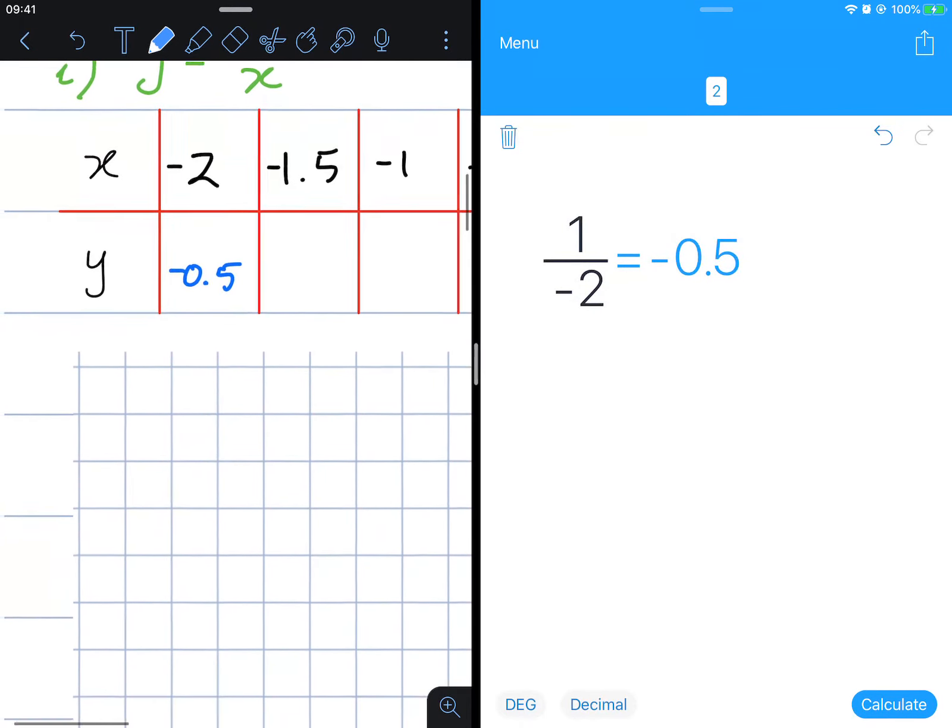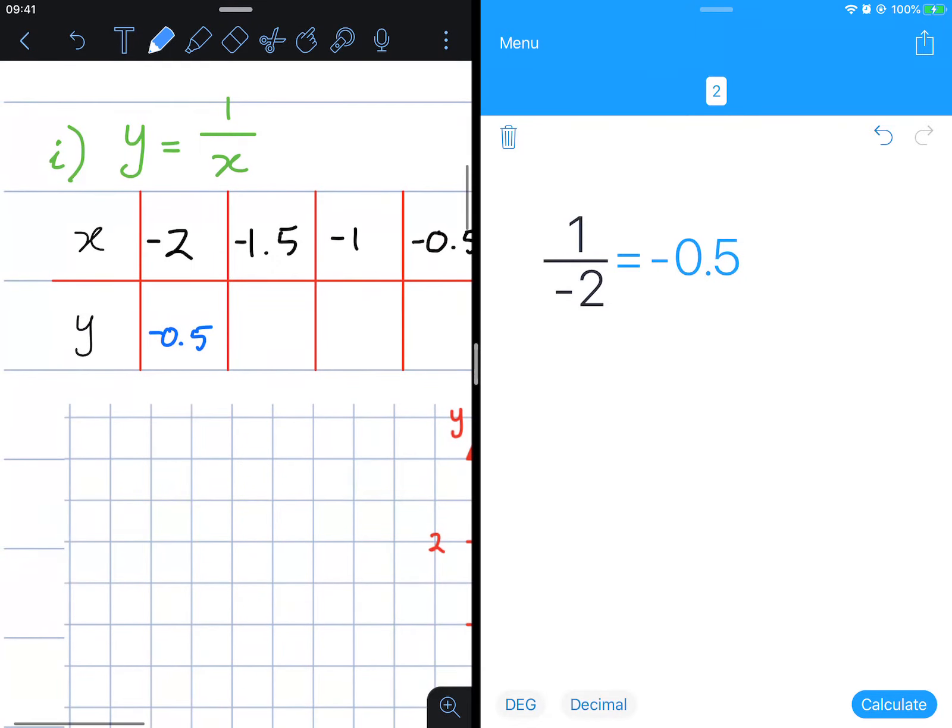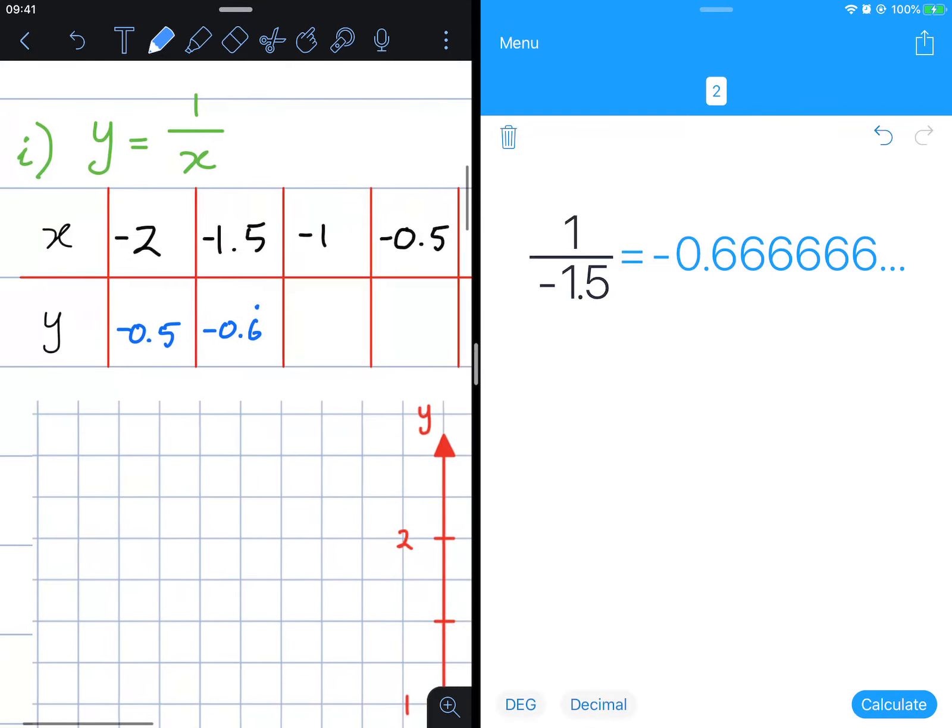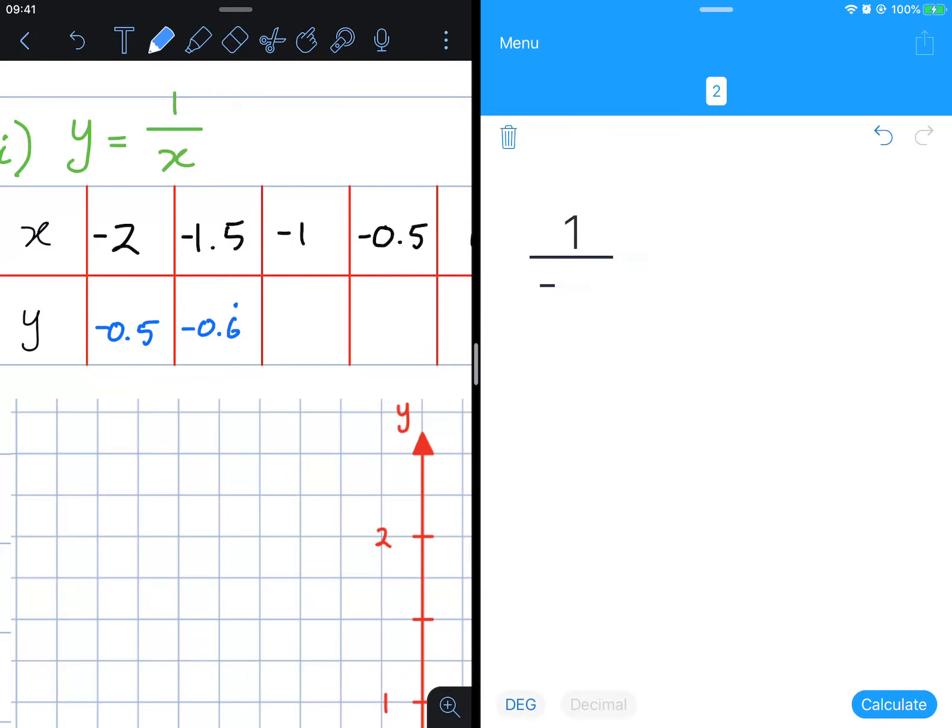Deleting this value, negative 1.5 gives us negative 0.6 recurring. Dividing by negative 1 gives us negative 1, and dividing by negative half we get negative 2.